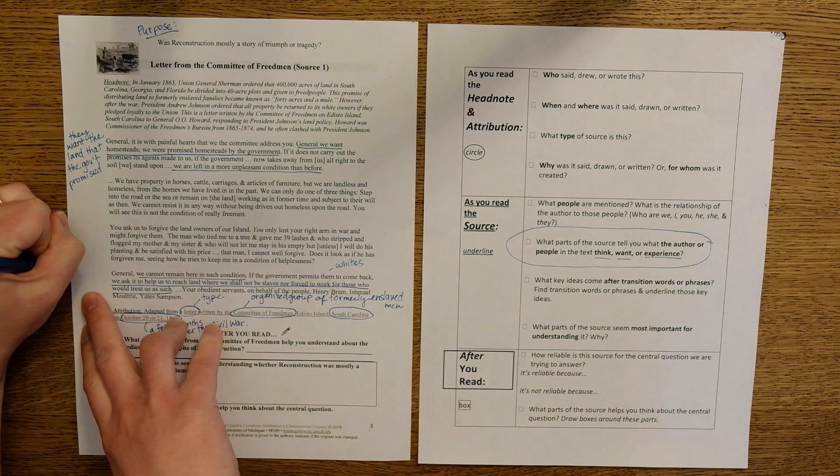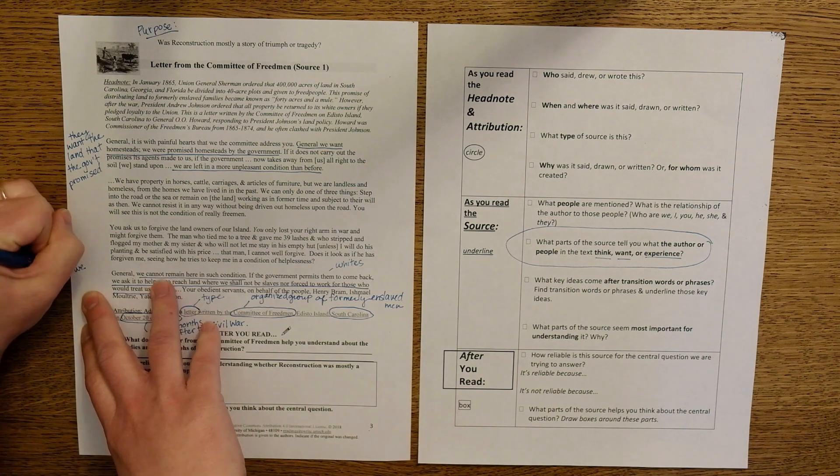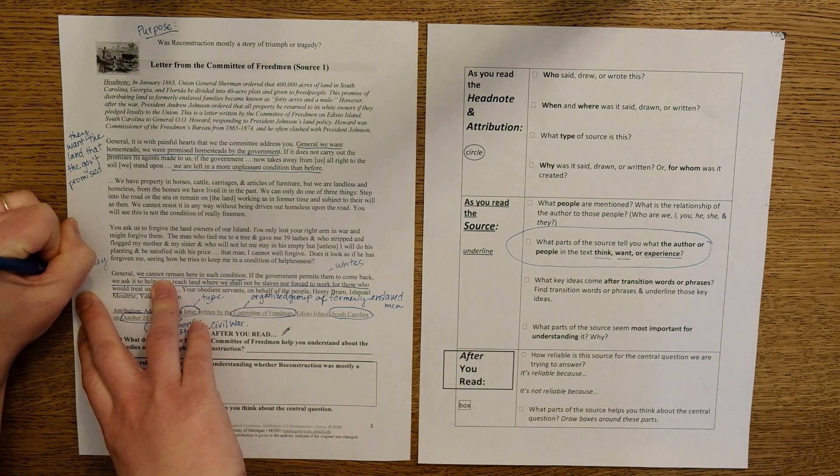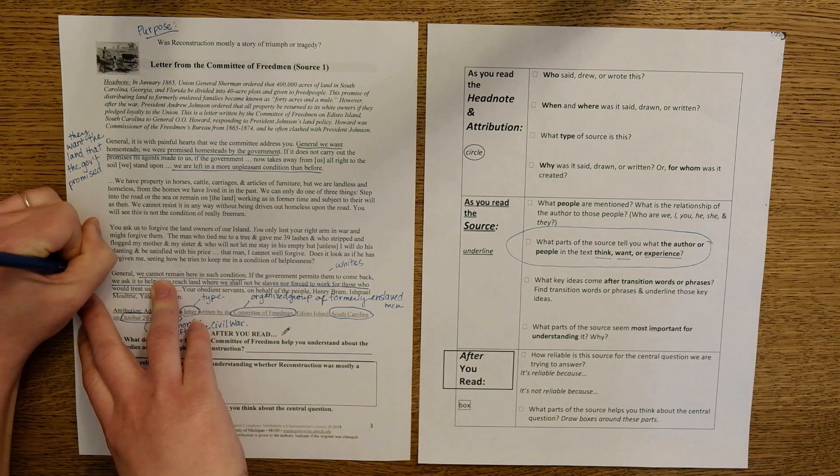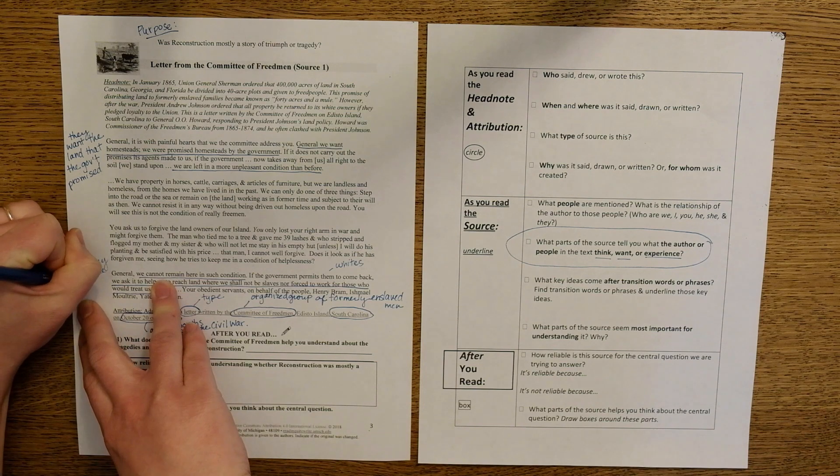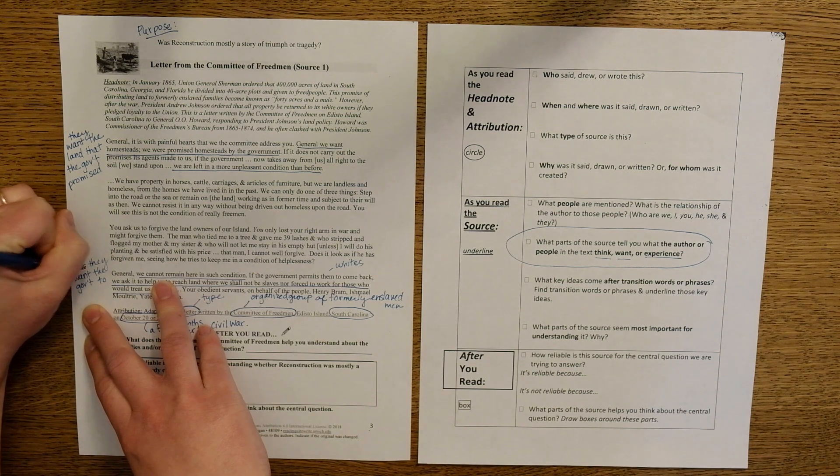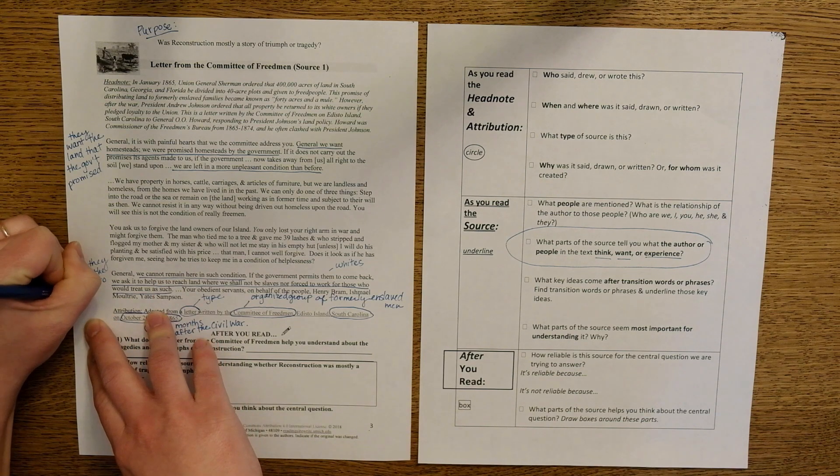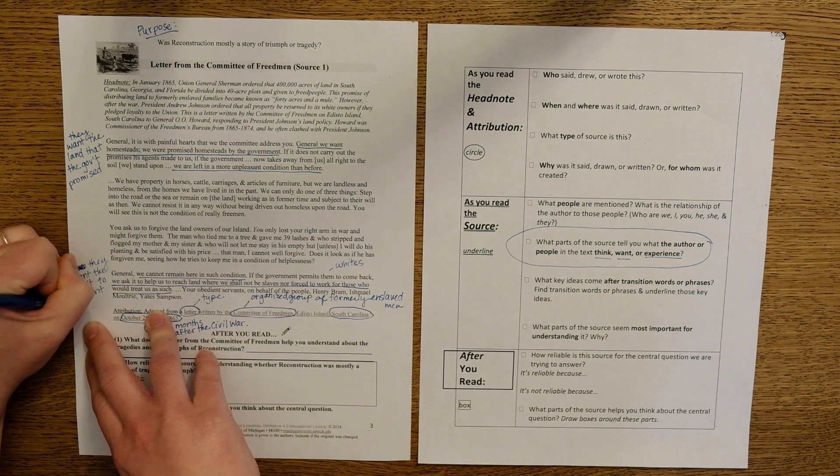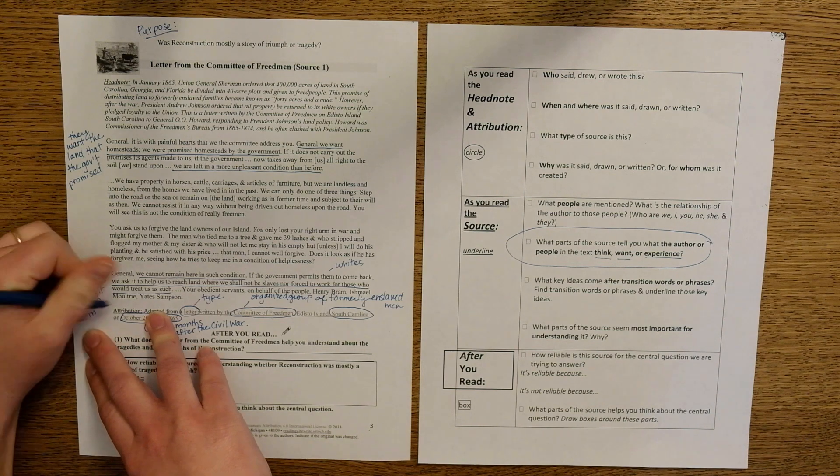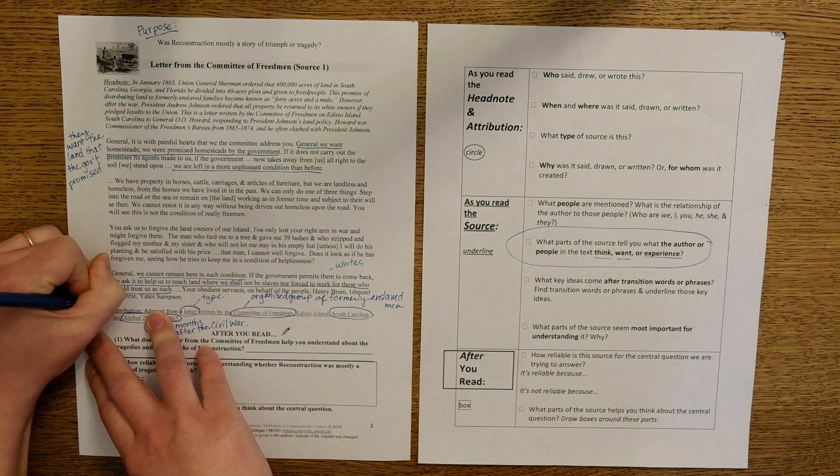So basically, we, or they, want the government to prevent them from having to work like slaves.